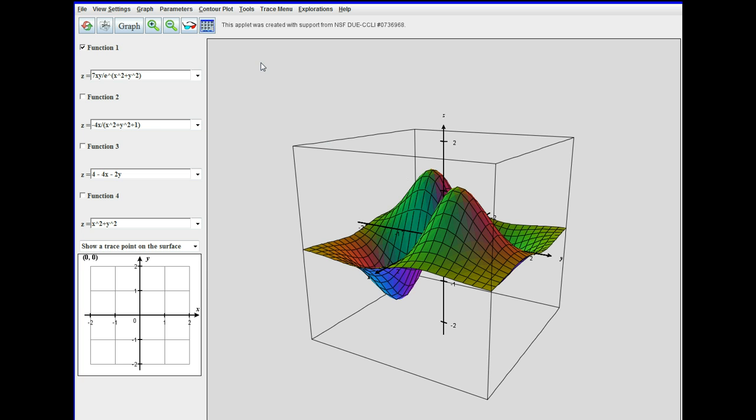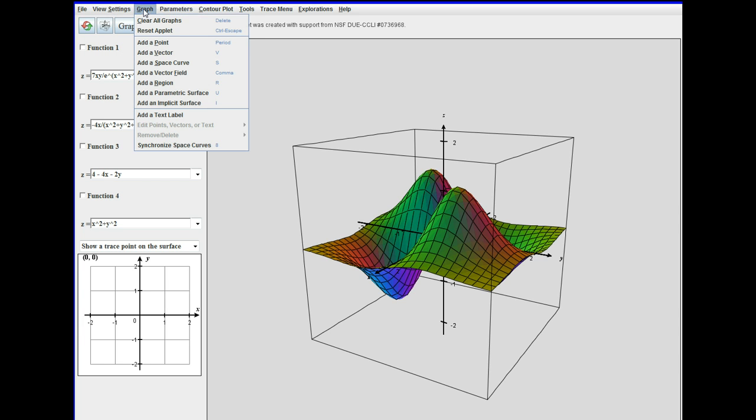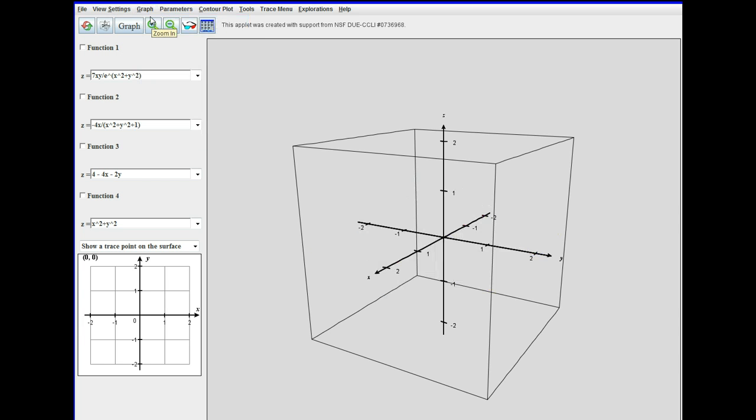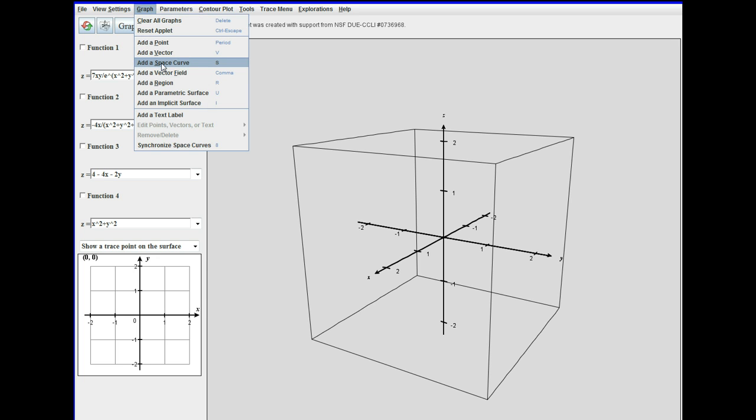Right now it's default to graph a function of two variables which is actually what we're doing in the next chapter. But I can just click that off. Clear all graphs. Now I'm going to go to graph again and I'm going to add a space curve.